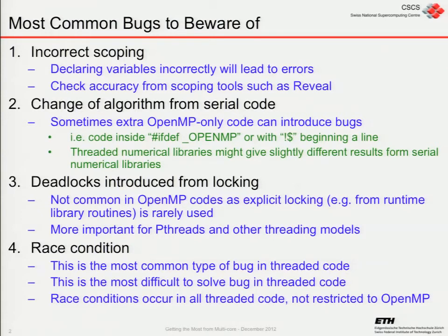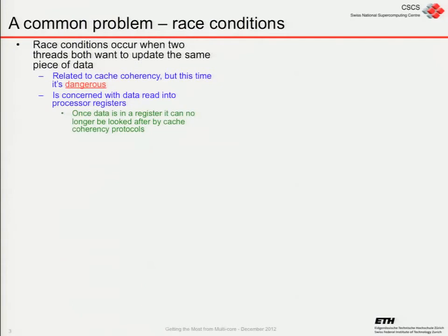The one that's the real most important bug for us is a race condition. This was mentioned by Jean Guillaume yesterday, and there's one of the examples you can use the debugging tool for to look at a race condition. It's the most common type of bug we get in threaded code and the most difficult to solve. It's not restricted to OpenMP — this is in all threaded code. It's really bad because sometimes you don't see them at all. Sometimes you don't see them for many minutes or even hours. But they're there sitting in the background, sometimes giving you completely different results each time.